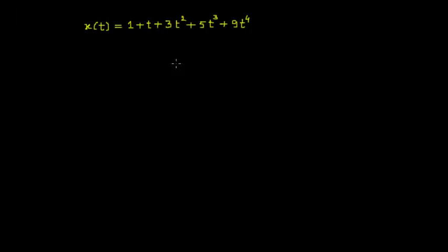Welcome to the video lecture on even and odd signals. In this video we'll consider an example wherein x of t, the given signal, is equal to 1 plus t plus 3t squared plus 5t to the power 3 plus 9t to the power 4. The task is to find the even part of the signal. We know that the expression to find the even part x_e of t is equal to